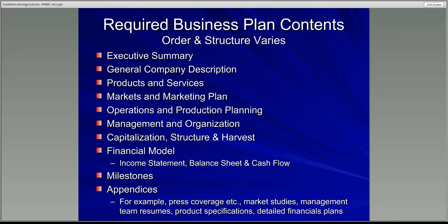Generally, the overall plan — all in, including appendices — might be around 40 pages. But the written part is generally somewhere around 15 to 20 pages of material that someone can read. Keep in mind that if you're too high-level, you're not going to convince someone that you're serious. Generally, you refer to more detailed information in the appendices. That's the sort of thing you're going after as you develop your business plan.